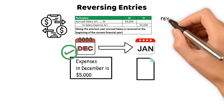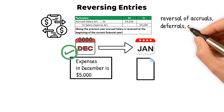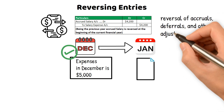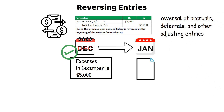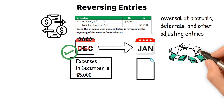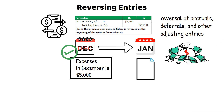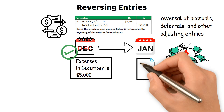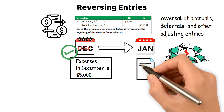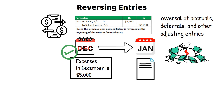Common examples of reversing entries include the reversal of accruals, deferrals, and other adjusting entries. For instance, an accrual for interest expenses in the previous period may be reversed at the beginning of the new period to reflect the actual payment made. Similarly, a deferral for prepaid expenses may be reversed at the beginning of the new period to reflect the expenses incurred.